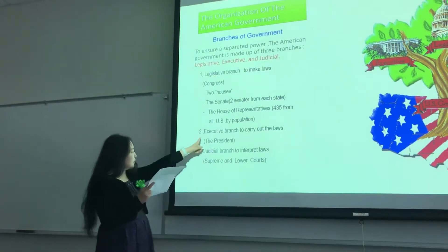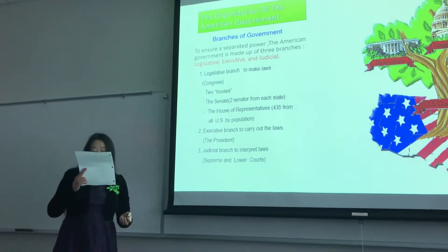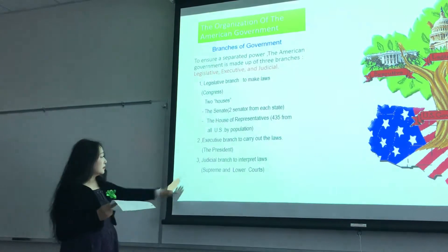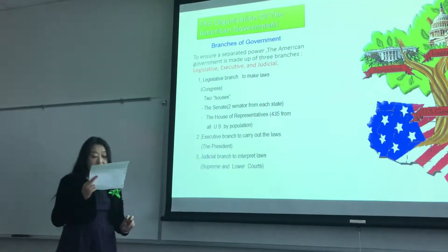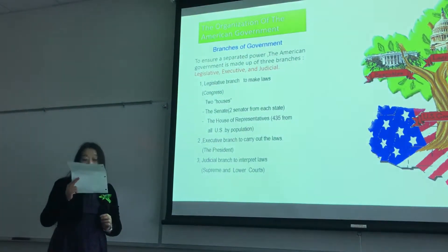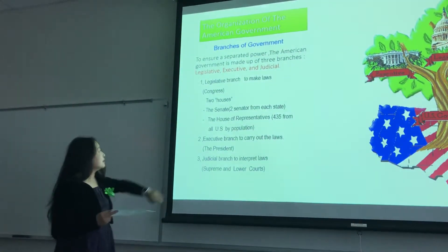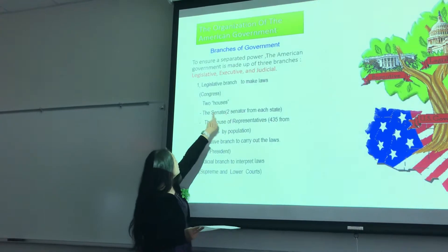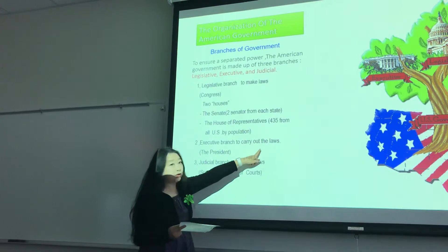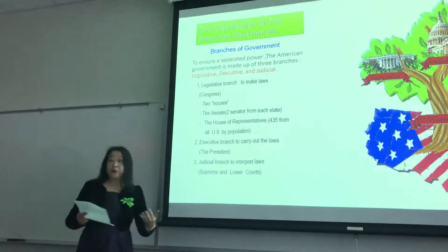The president and the chief executive form the executive branch, which has the responsibility to carry out the law. The third is the judicial branch — the Supreme Court and the lower national courts — which interprets laws. So the legislative branch makes the law, the executive carries out the law, and the judicial branch interprets the law.